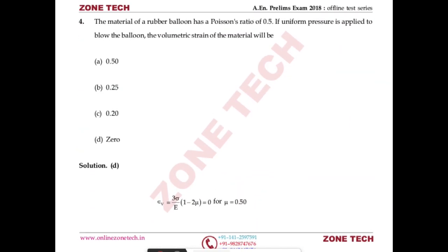Question number four: the material of a rubber balloon has a Poisson's ratio of 0.5. If uniform pressure is applied to blow the balloon, what is the volumetric strain of the material?